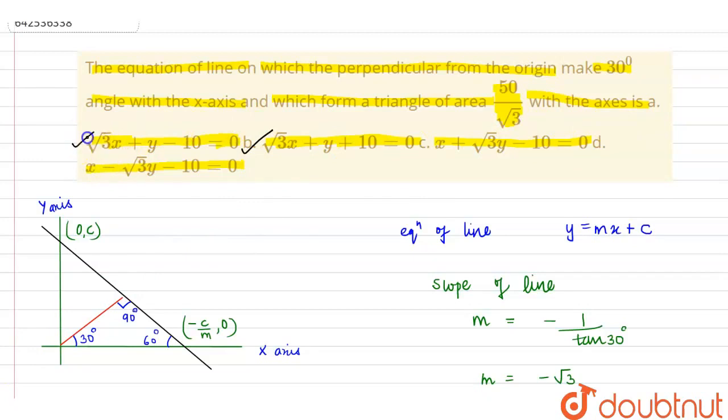Root 3x plus y plus minus 10 equals 0 are options A and B, which are our final answers.